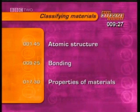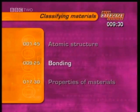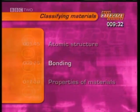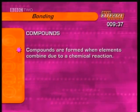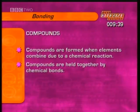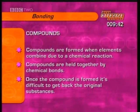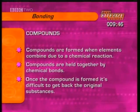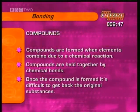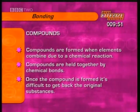The next section is about bonding — how elements combine with each other. Compounds are formed when elements combine due to a chemical reaction, and are held together by chemical bonds. Once a compound is formed, it's difficult to get back to the original substances. This clip explains the role electrons play in making different types of chemical bonds.